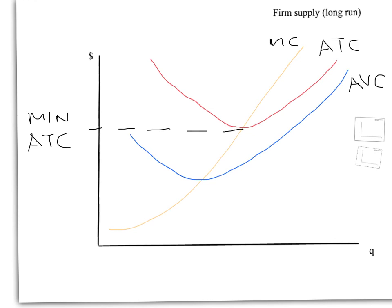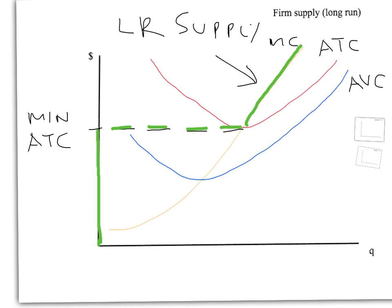The long run supply at the firm level is straightforward. If the price is less than minimum average total cost, the firm exits and produces nothing. If price is above minimum average total cost, it will produce where price — which is marginal revenue — intersects marginal cost. So the long run supply curve is zero at any price less than minimum average total cost, then jumps across to the marginal cost curve and follows it upward. The green curve here is the long run supply curve for the firm.